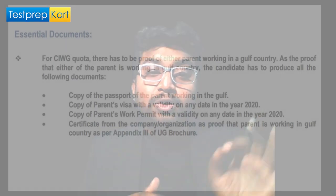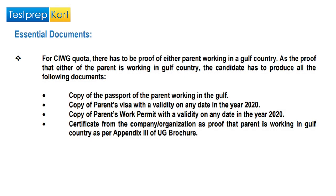For CIWG quota admission, proof that either parent is working in a Gulf country is required. The following documents must be produced: copy of the parent's passport, copy of the parent's visa with validity on any date in 2020 or 2021, copy of the parent's work permit with validity on any date in 2020 or 2021, and a certificate from the company or organization confirming the parent is working in a Gulf country, as per Appendix 3 of the UG brochure.